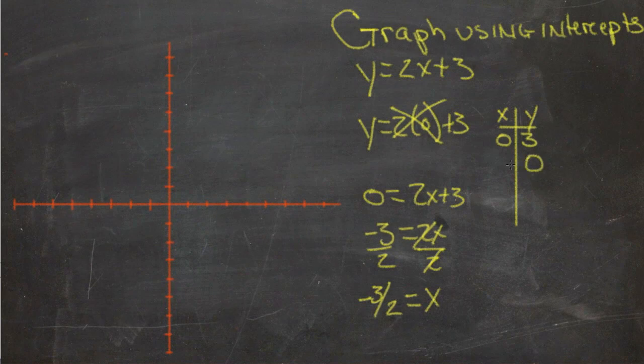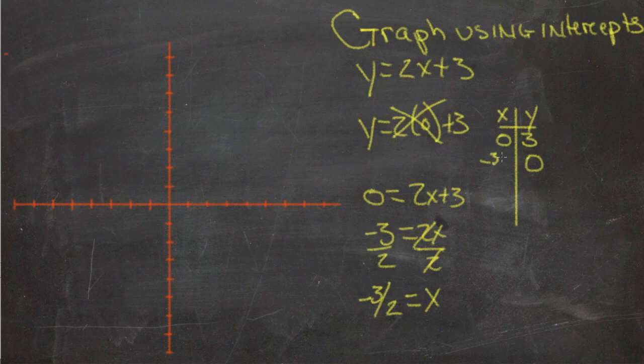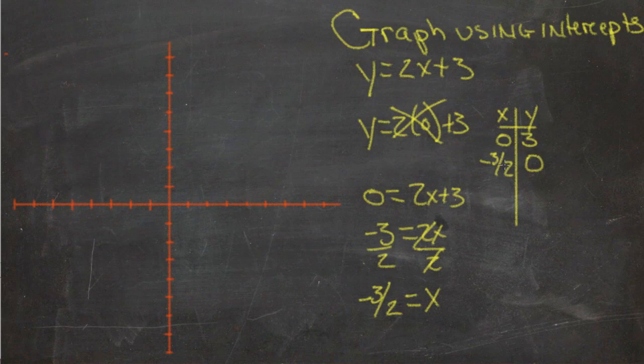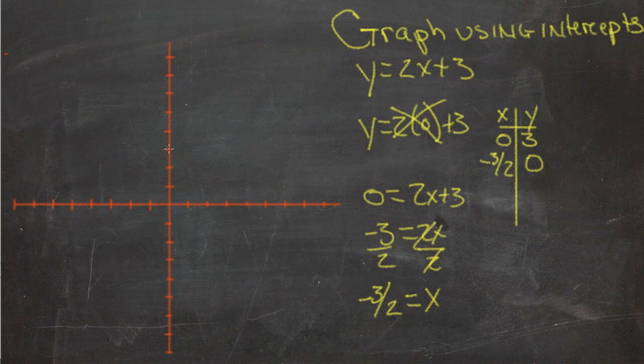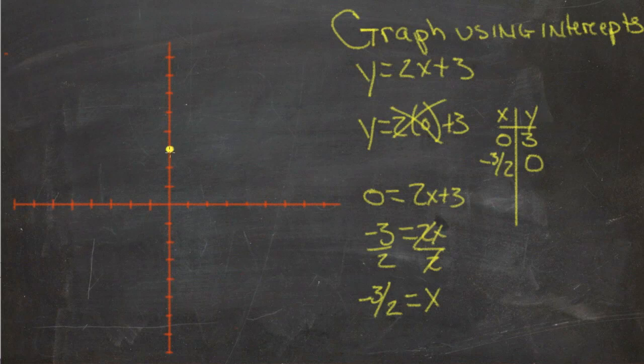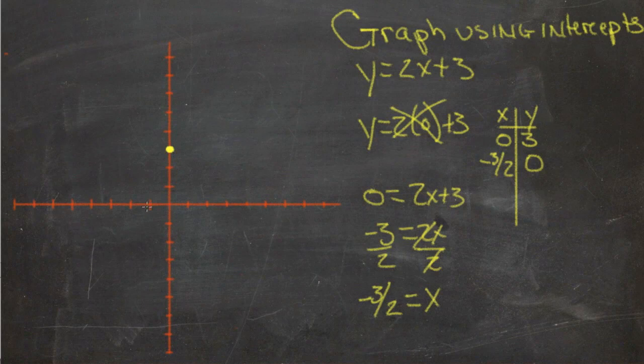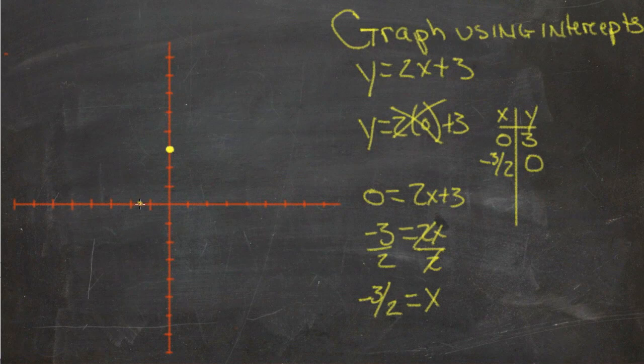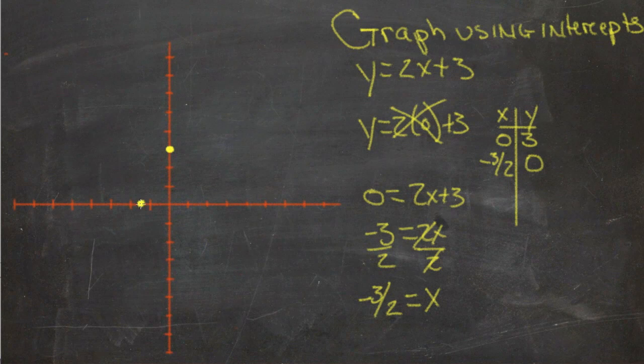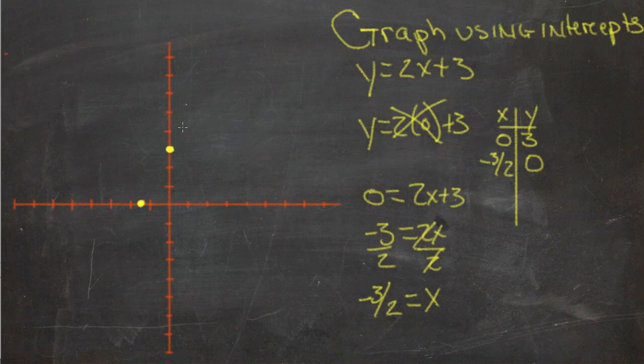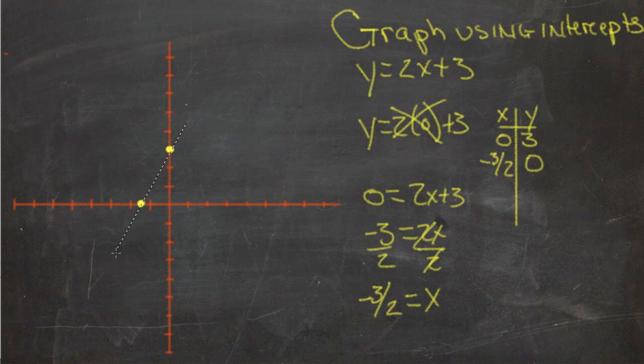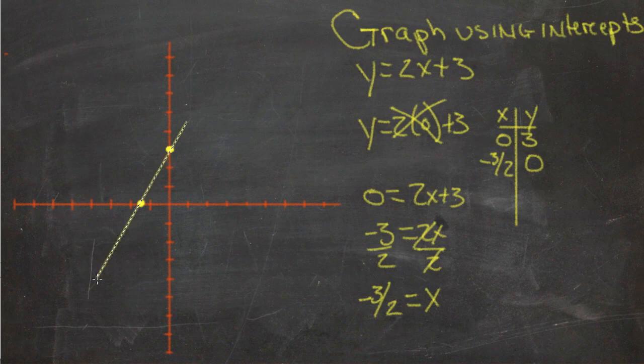So when y is 0, x is negative 3 halves. So our two points then are x is 0, no left or right, y is 3, so we have a point up here. And then x is negative 1 and a half, and no up and down, y is 0. And we connect those two points with a straight line,